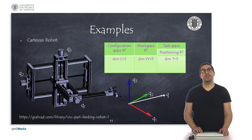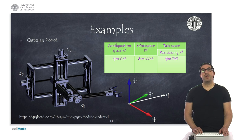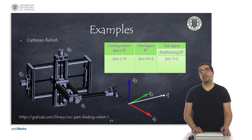To finish this series of examples, we show the configuration space, workspace, and task space of a Cartesian robot. All of them are subspaces of R3. Its configuration is defined by a vector with three real displacement values corresponding to the displacement of each of the axes.